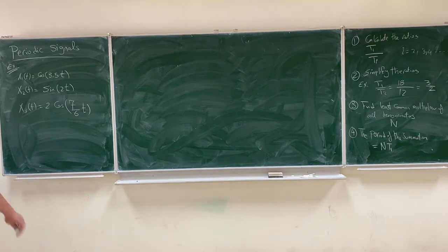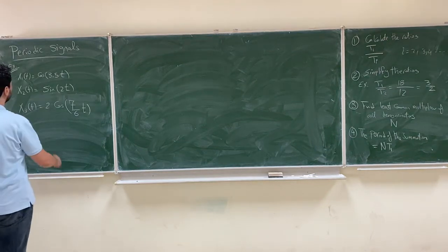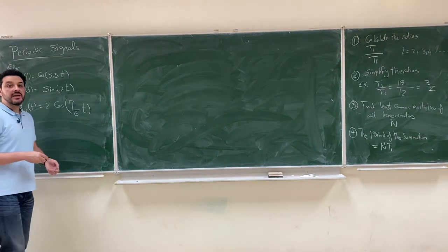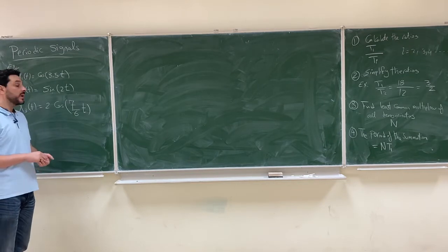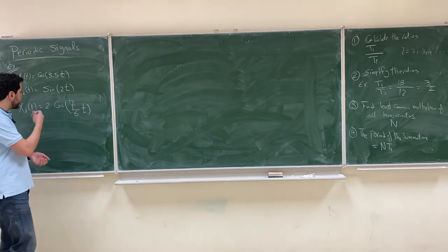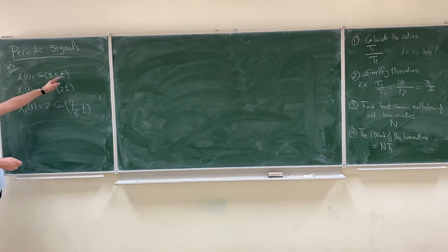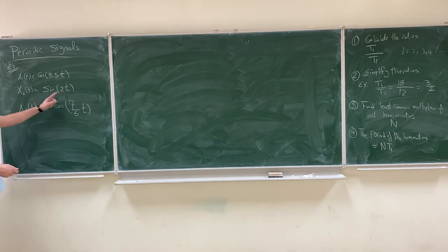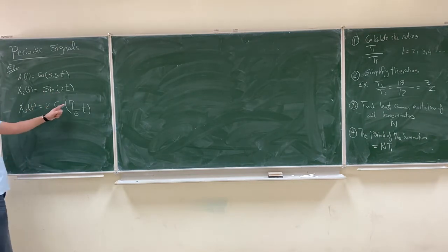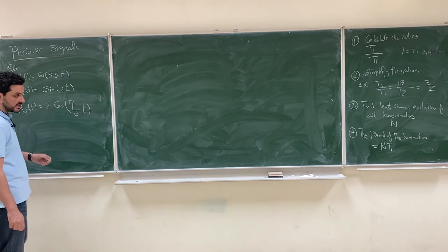We are going to solve an example on summing three periodic signals. The first periodic signal is cosine 3.5t, the second one is sine 2t, and the third one is 2 cosine (7/6)t.